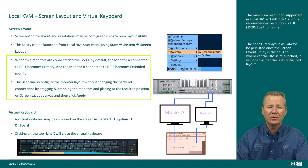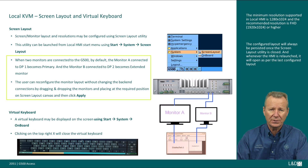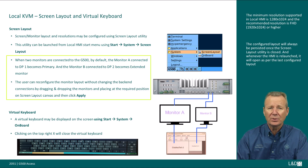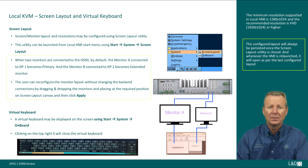Multiple monitors can be connected to the G500 via display ports. When a single monitor is connected, the connected monitor becomes the primary. When two monitors are connected, by default the monitor connected to the DisplayPort labeled DP1 becomes primary, and the monitor connected to DP2 becomes the extended monitor. Monitor A connected to DP1 is shown as DisplayPort 1 on the screen layout; monitor B connected to DP2 is shown as DisplayPort 0. The user can reconfigure the layout by dragging and dropping monitors on the canvas, clicking Apply, and closing the utility. The configured layout is always persisted and will be applied whenever the HMI is relaunched.